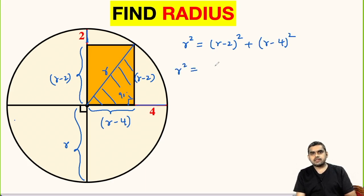r squared equals, we will expand this and we will use the identity a minus b whole square is equal to a square minus 2ab plus b square.